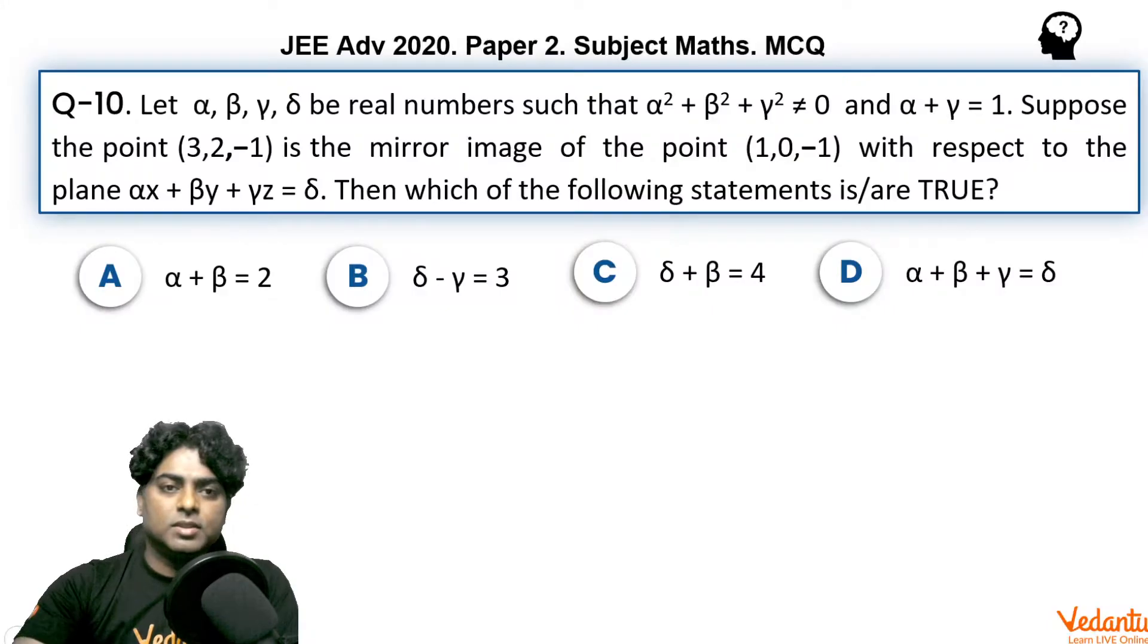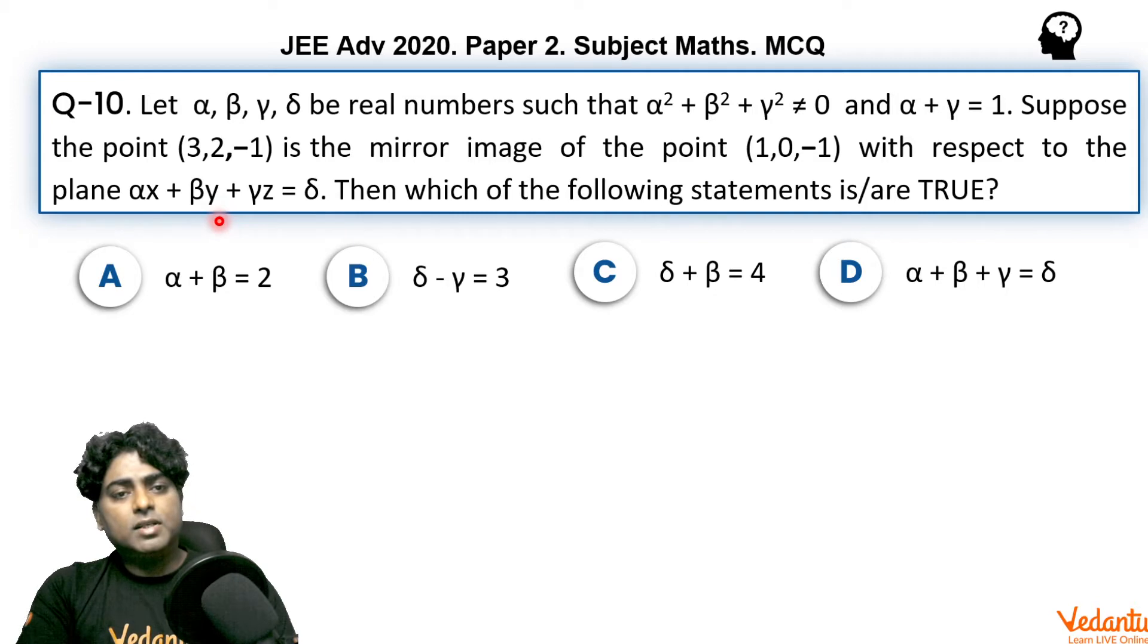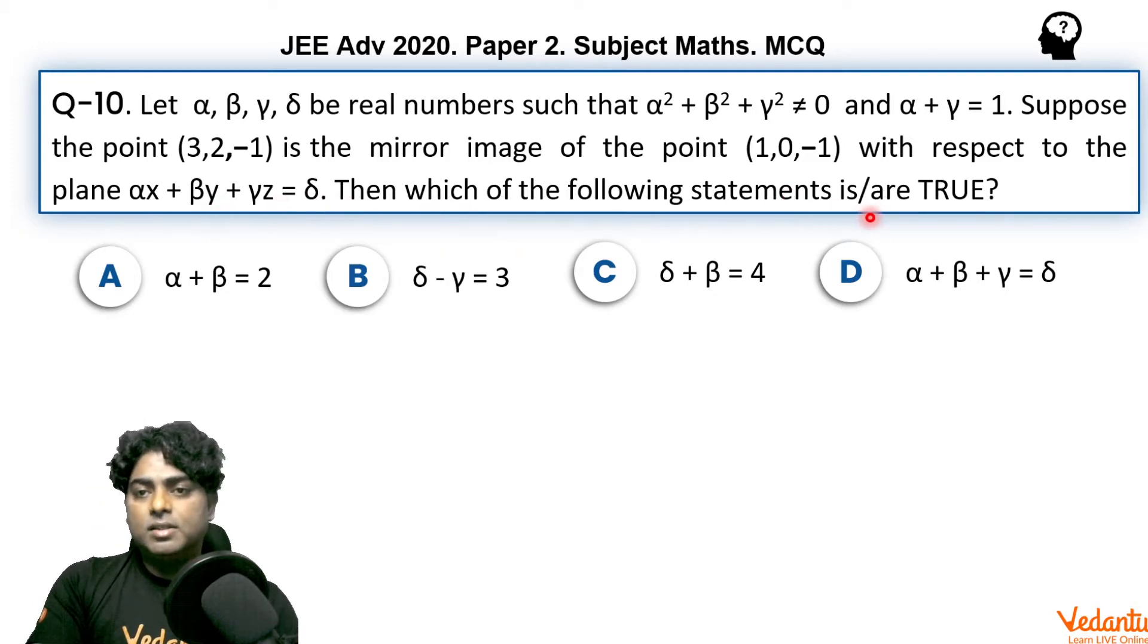At the problem, it says let α, β, γ, δ be four real numbers such that α² + β² + γ² ≠ 0, means at least one of them is nonzero, and α + γ = 1. Suppose the point (3, 2, -1) is a mirror image of the point (1, 0, -1) with respect to the plane αx + βy + γz = δ. Then which of the following statements is/are true?